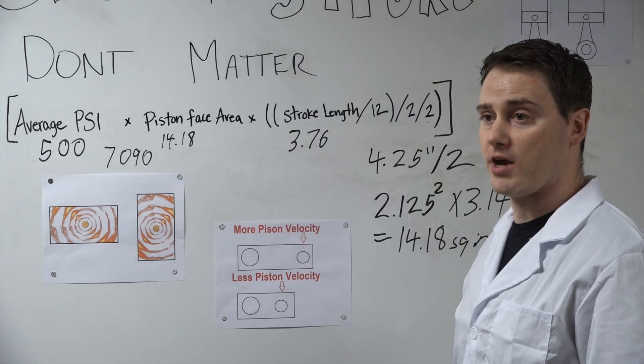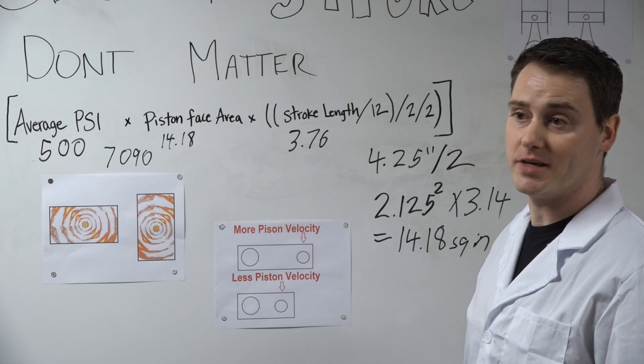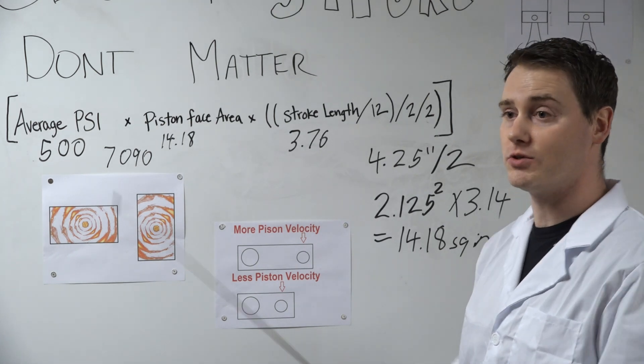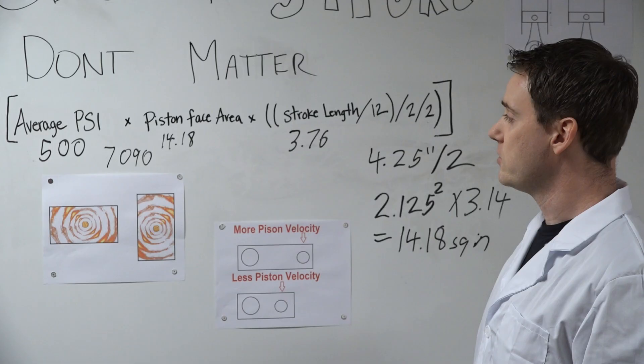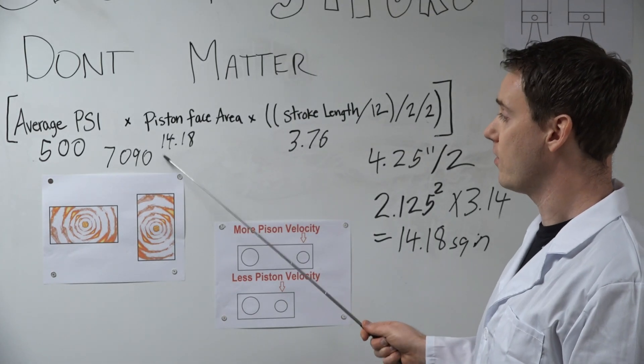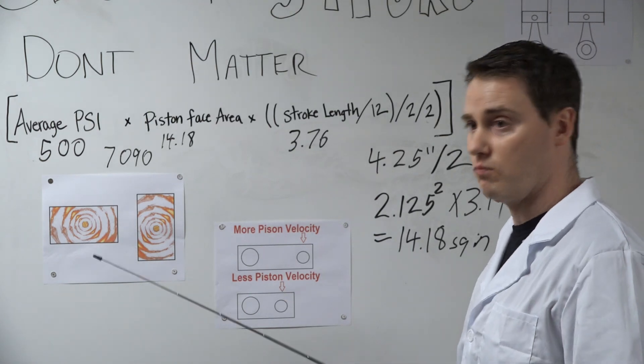And now we've got to divide that by 12 because our stroke isn't 24 inches. If our crankshaft was 24 inches long, it would be easy because we divide by 2 to get an effective stroke length from the center of the crankshaft to the connecting rod of 12 inches.